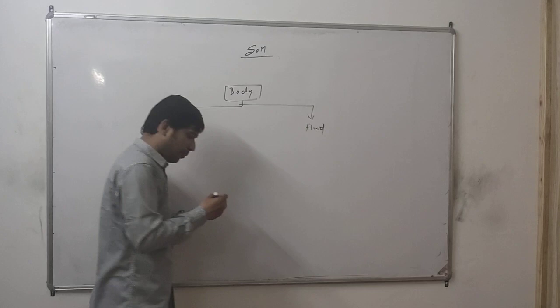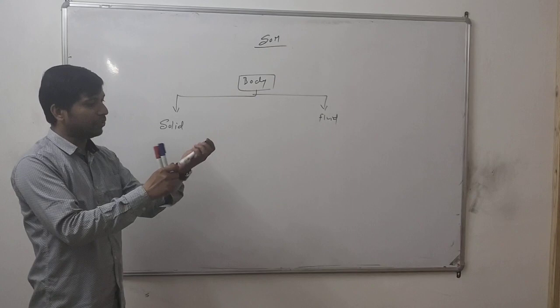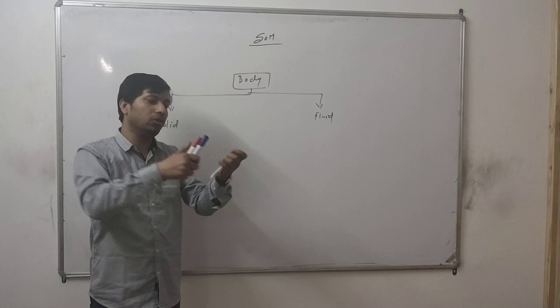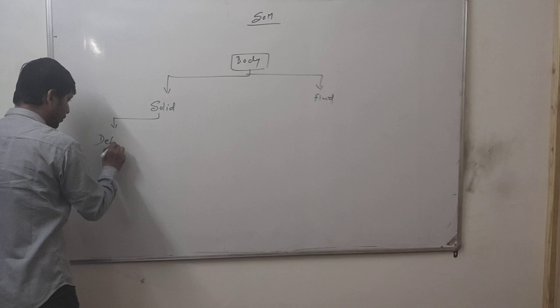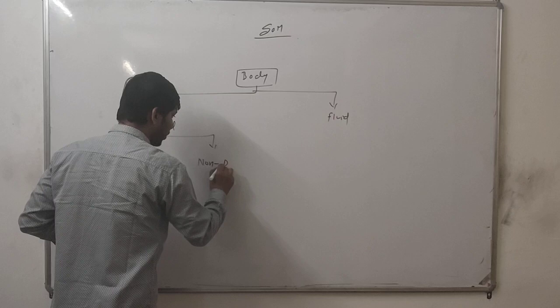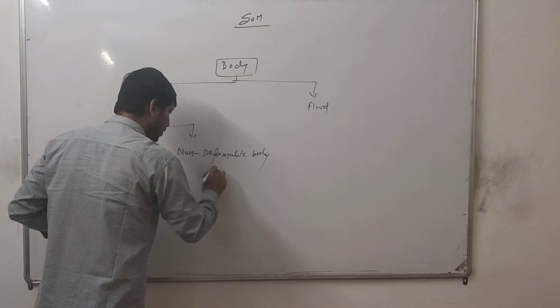Solid body is in two parts. If I apply a load to this body, it will be elongated. Suppose that body is a deformable body. The second type is the non-deformable body, which is the rigid body.